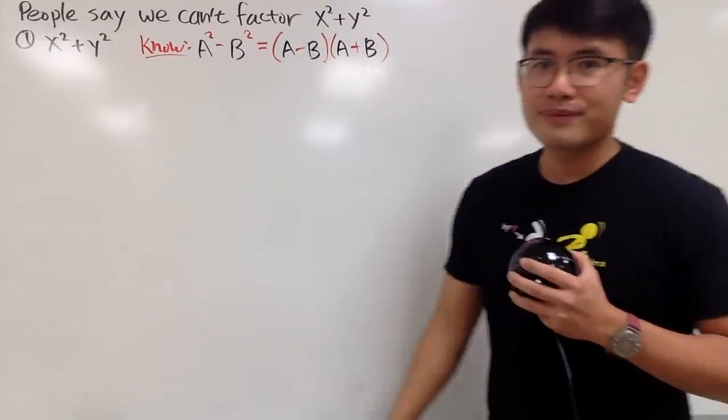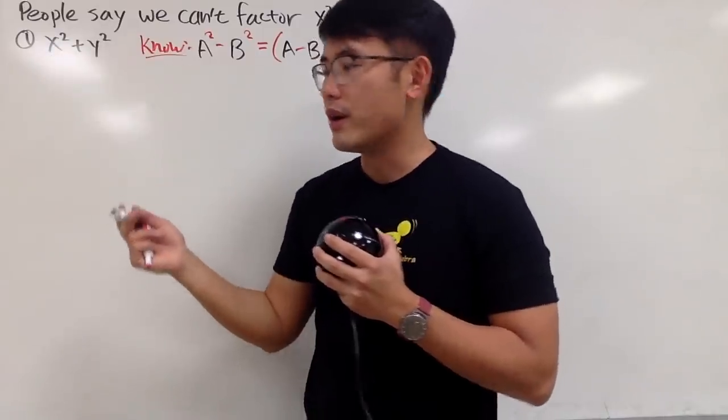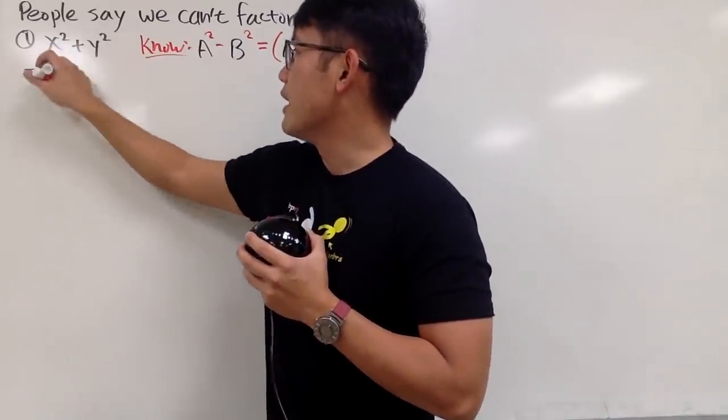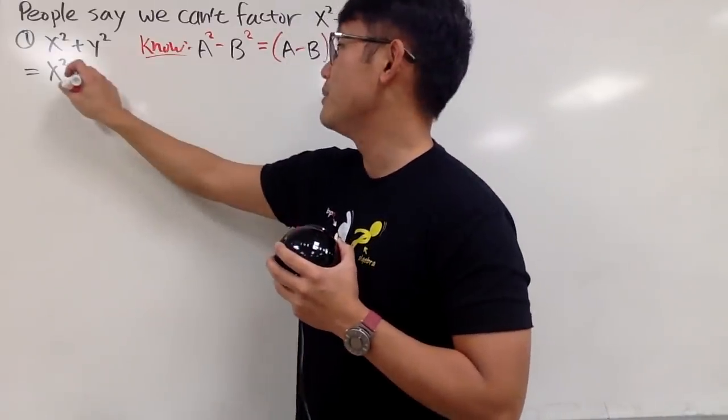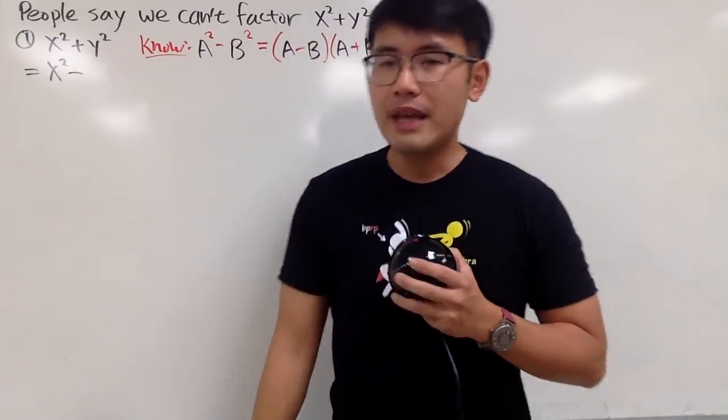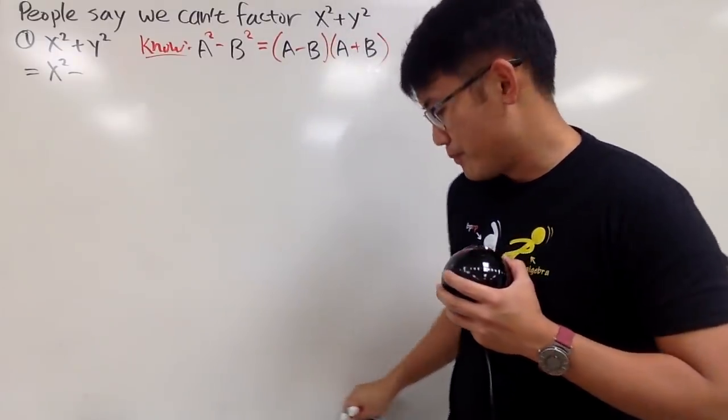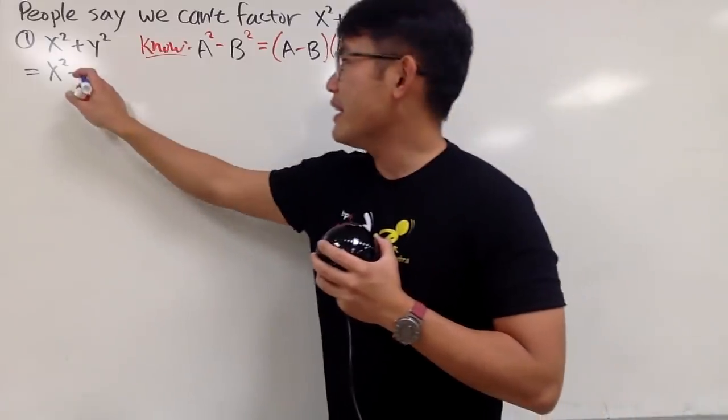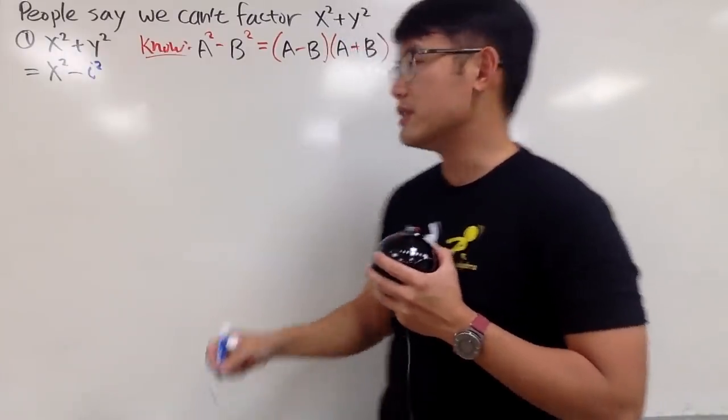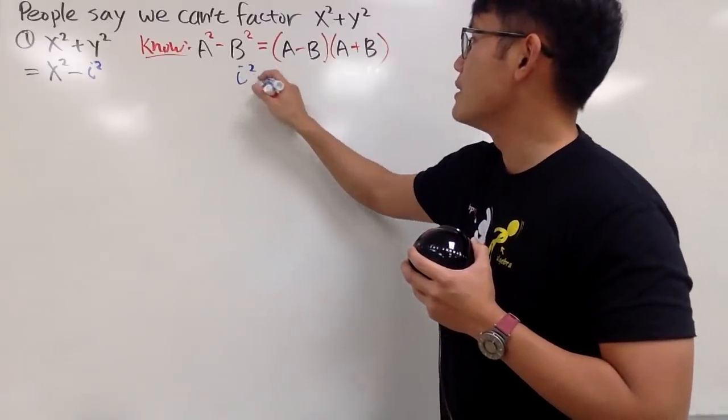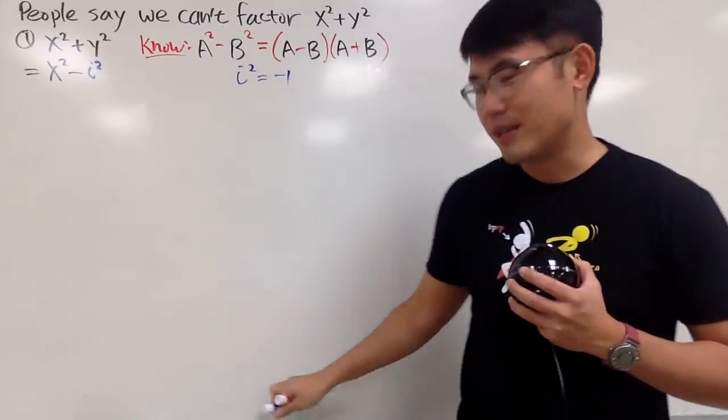We have x squared plus y squared. Let me just write down the x squared, and in order for us to use that, we have to have a minus in between. Let me just put a minus. And everybody knows, a negative times a negative is equal to a positive. But I know, negative times i squared will also give you a positive. And the reason is because we know that i squared is equal to negative 1. And now, with the i being involved, we are in the complex world.